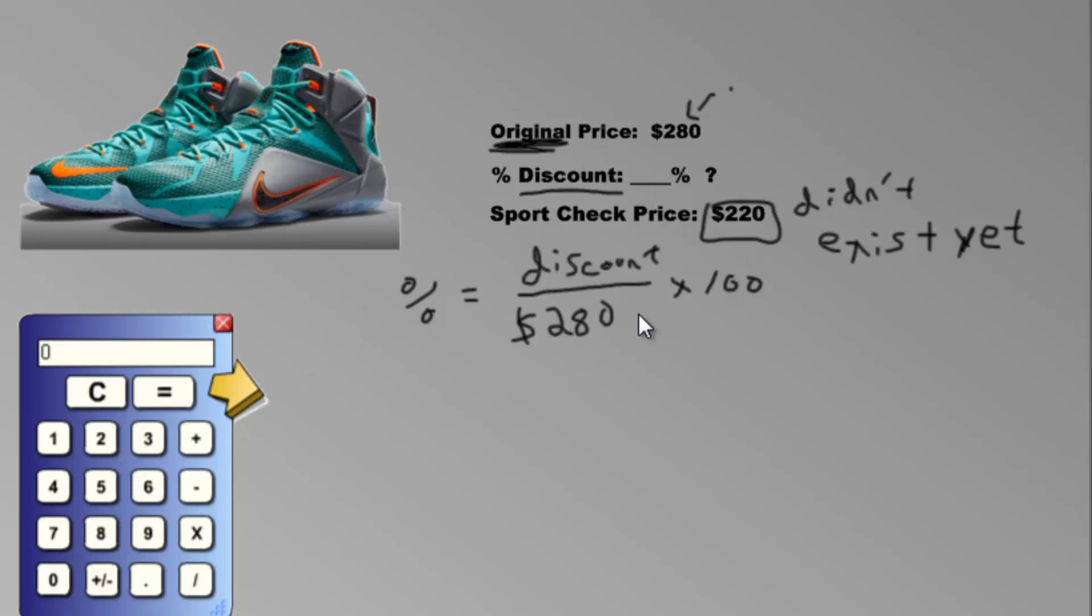Now how much is the discount? We don't even know what this number is yet. If it started at $280 and it went down to $220, isn't that a discount of $60? Because $280 minus $220 is $60. The price went down $60.